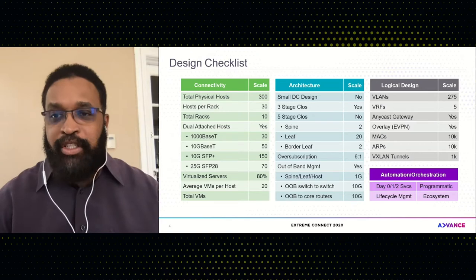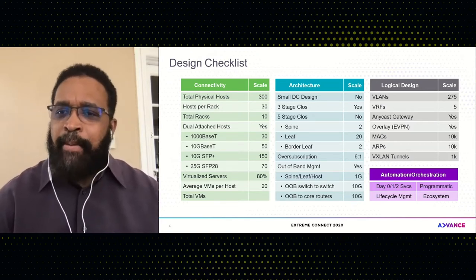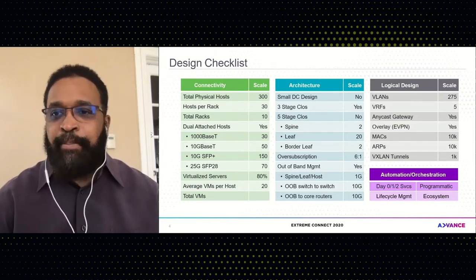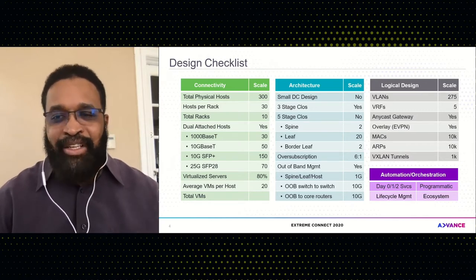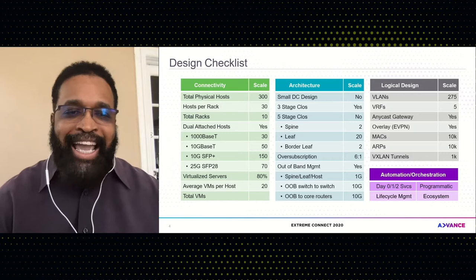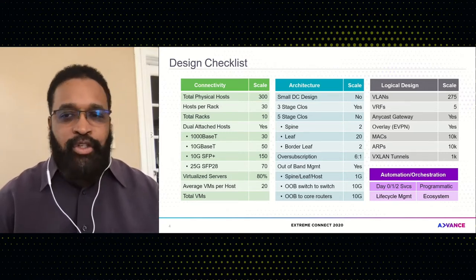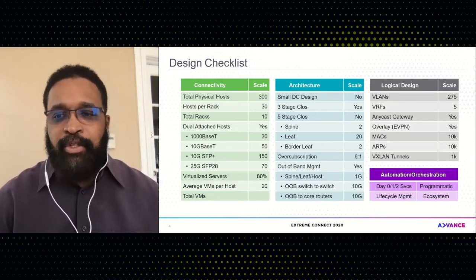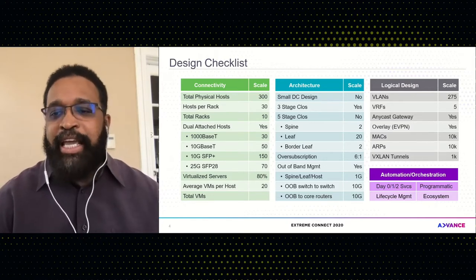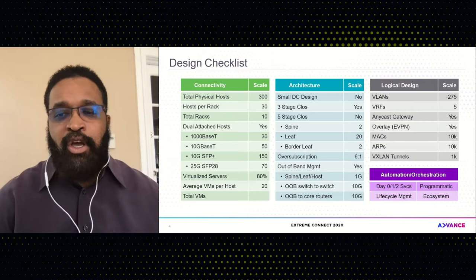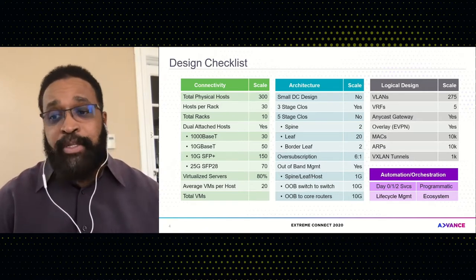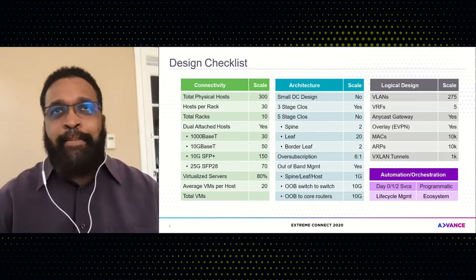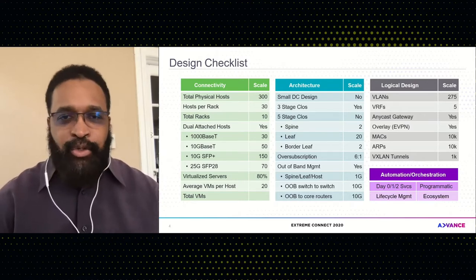You also have to look at the logical design — basically how many VLANs and VRFs, MACs and ARP addresses. If you plan on using network virtualization such as BGP EVPN, you have to determine how many VXLAN tunnels will be required. And lastly, you have to look at automation: day zero services for IP fabric deployments, day one services for adding tenants, day two services for adds, moves, and changes, full lifecycle management, and programmatic interfaces into ecosystem partners.